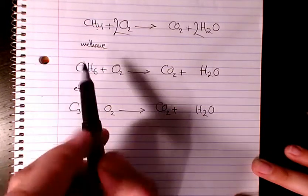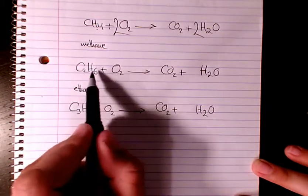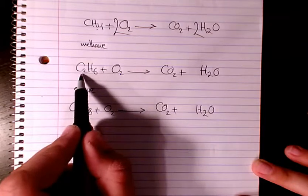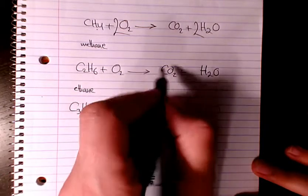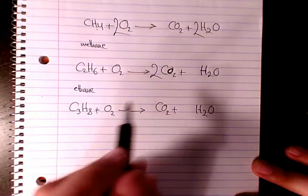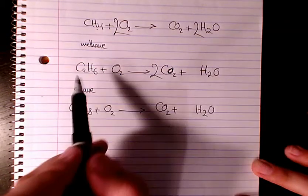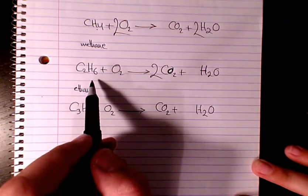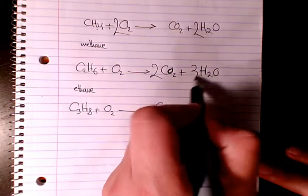Next one is ethane. The combustion or oxidation of ethane reacts with oxygen, and here we have two carbon atoms, so here we must have two moles of CO2. And also we have six atoms of hydrogen, so we need to have three here to make it three times two, six.